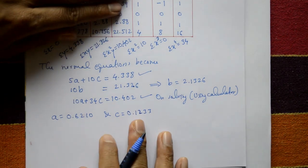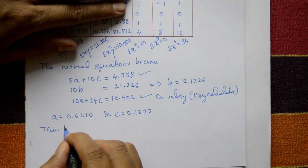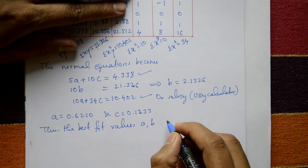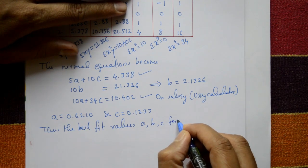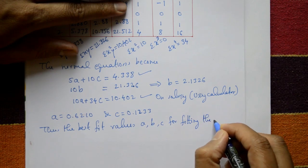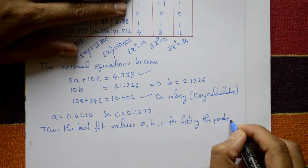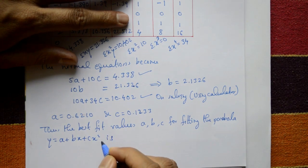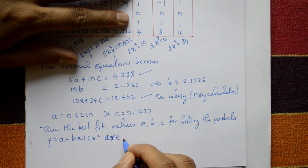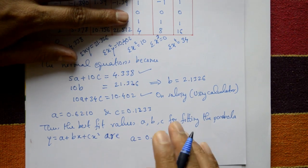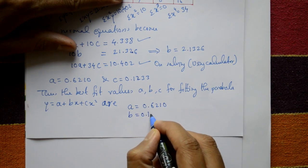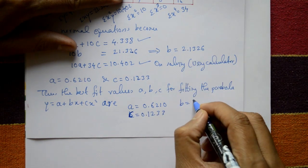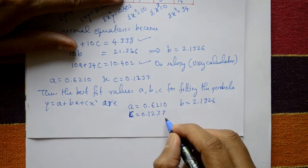Thus the best fit values for fitting the parabola y = a + bx + cx² are: a = 0.6210, b = 2.1326, and c = 0.1233. This is the required solution.